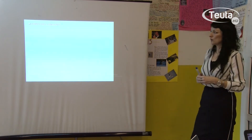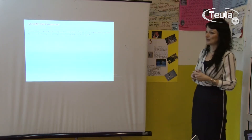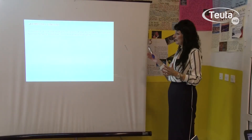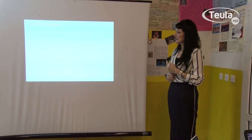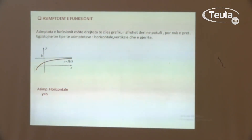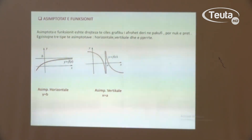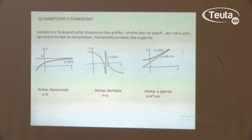Edhe një veti tjetër të funksionit janë asimptotët e funksionit. Asimptotët e funksionit nuk i keni takuar më herët në vitin e parë — këto janë drejtëza të cilave grafiku i funksionit i afrohet deri në pafundësi, por nuk i pret ato. Ekzistojnë 3 tipe të asimptoteve: asimptota horizontale, vertikale dhe e pjerrët. Në rastin e parë kemi asimptotën horizontale, dhe është drejtëza y = b. Shikoni, grafiku i funksionit i afrohet por nuk e pret këtë drejtëzë y = b.